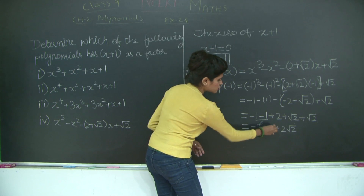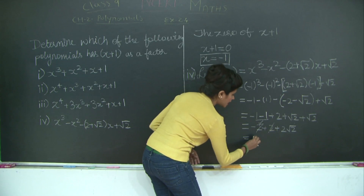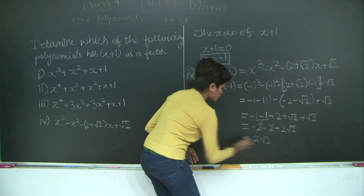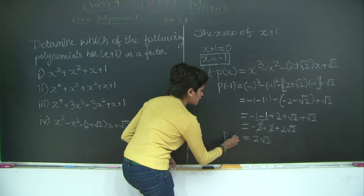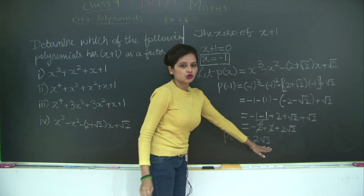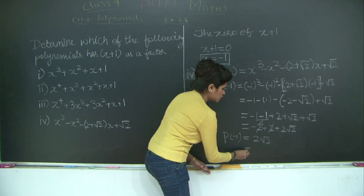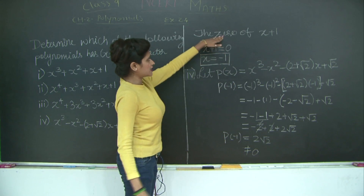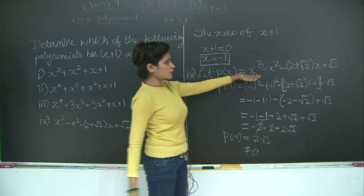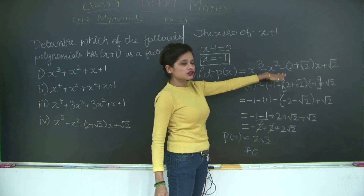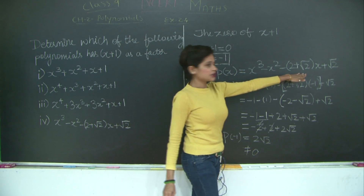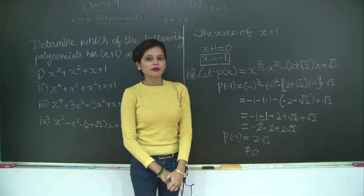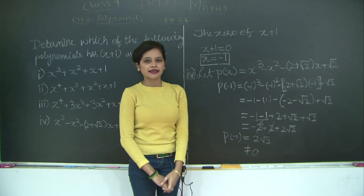Minus 2 plus 2 cancels out, and I am left with 2 root 2. So p of minus 1 equals 2 root 2, which is the remainder and is not equal to 0. Therefore, x plus 1 is not a factor of the polynomial x³ − x² − (2+√2)x + √2. With this, we wind up the first question of exercise 2.4 and will continue with the other sums in the next class.